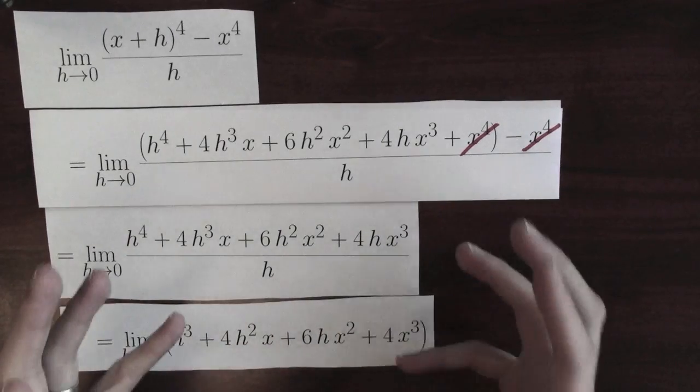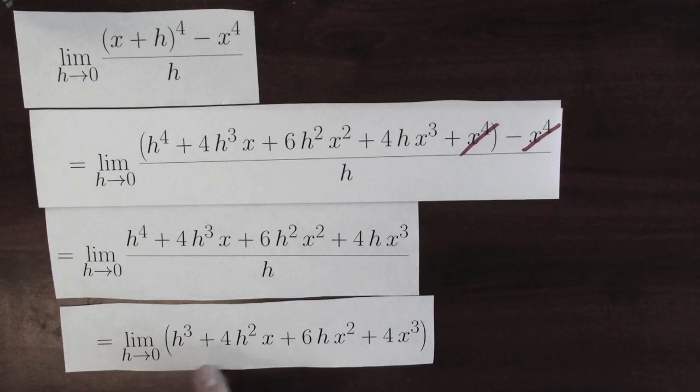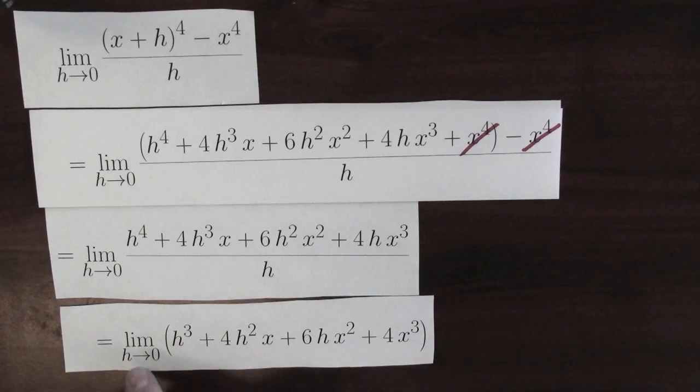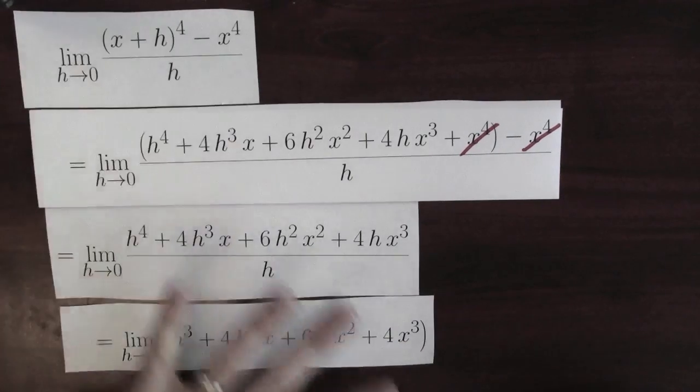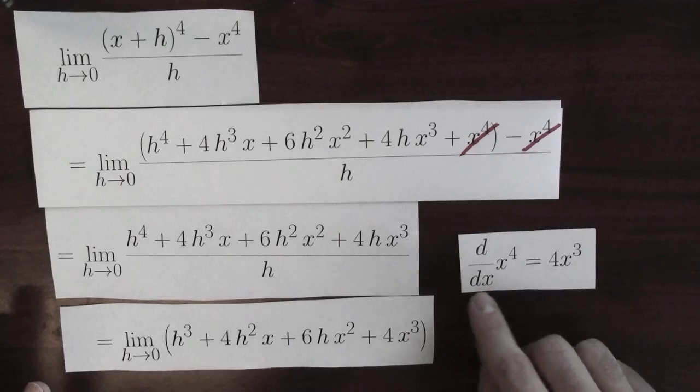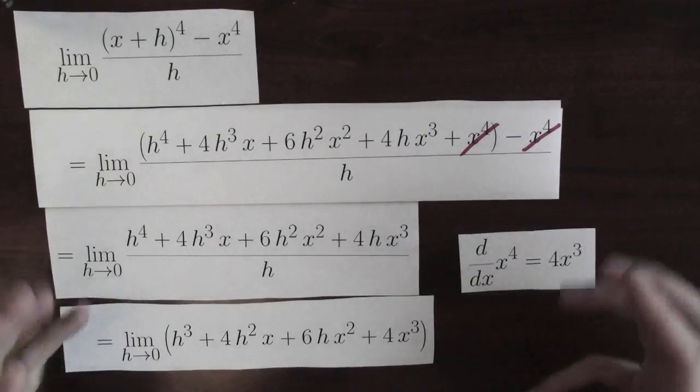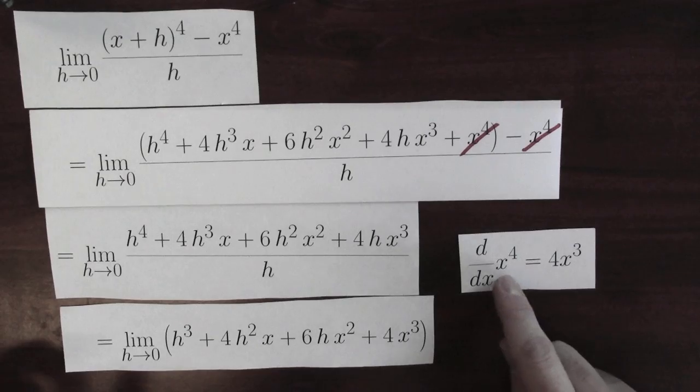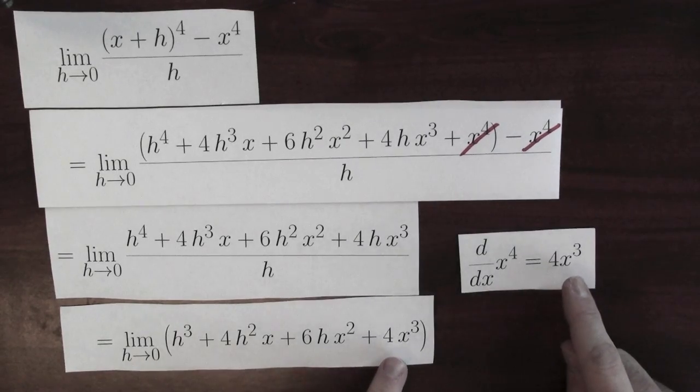Now, we're practically there. I want to evaluate this limit. Most of these terms here have got an h in it. So, when I take the limit, these terms are all 0. The only term that survives is this one, which as far as h is concerned is a constant. It's the limit of 4x cubed as h approaches 0. That's just 4x cubed. And because this whole mess is calculating the derivative of x to the 4th, what I've really done here is shown, from the definition of derivative, that the derivative of x to the 4th is 4x cubed.